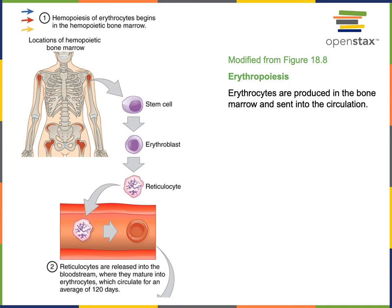Erythroblasts will eject their nucleus in order to make more space for hemoglobin. When this occurs, the erythroblast differentiates into a reticulocyte. The reticulocytes then migrate out of the bone marrow into the blood, where they mature into erythrocytes. Erythrocytes then circulate in the blood transporting oxygen and carbon dioxide for approximately 120 days.